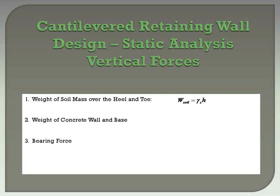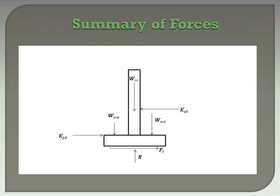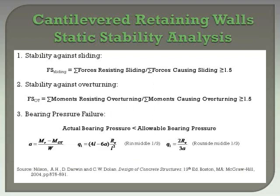The vertical forces acting on the cantilevered retaining wall include the weight of the soil over the heel and toe of the base, the weight of the concrete wall and base, and the resultant bearing force from the soil. Here we can see the horizontal and vertical forces needed to perform a static analysis, and this figure also shows where these forces act.